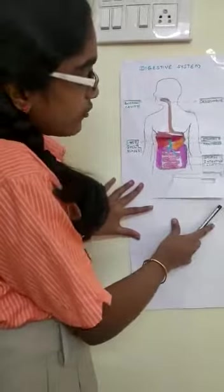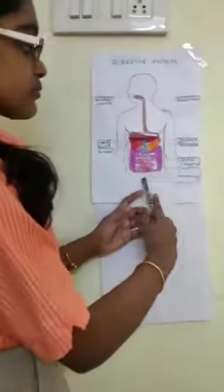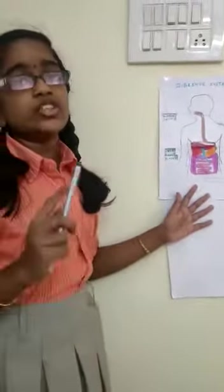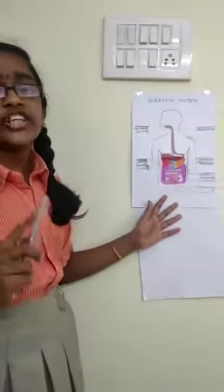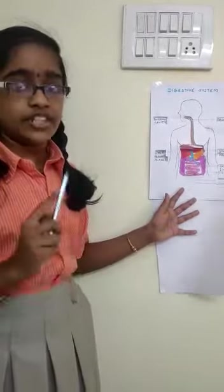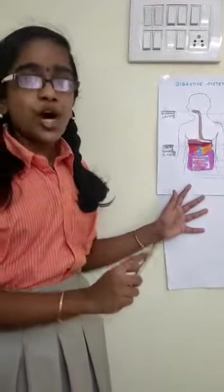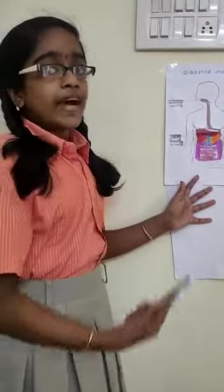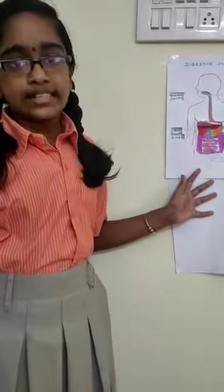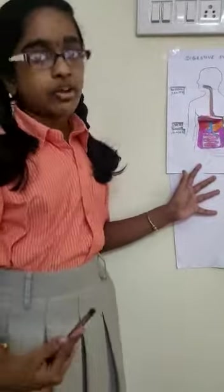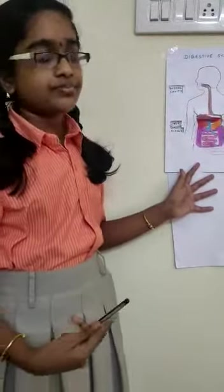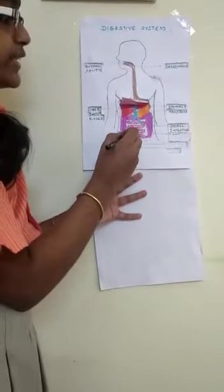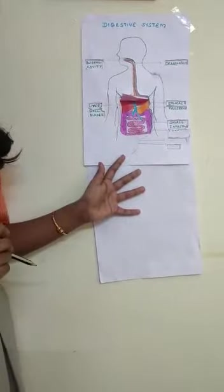At the end of the small intestine, the components of the food change into simpler forms — carbohydrates to sugar, fat to fatty acids and glycerol, and protein to amino acids. The absorption of food takes place at the inner wall of the small intestine.